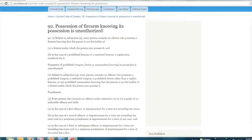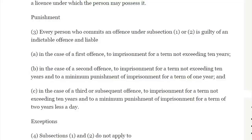So, here's the Criminal Code. Let's have a look here under Punishment. Every person who commits an offense under subsection 1 or 2, is guilty of an indictable offense. So, there's no summary conviction here. In the case of a first offense, to imprisonment for a term not exceeding 10 years. So, 10 years and it's indictable right off the bat. In the case of a second offense, 10 years plus 1. In the case of a third, 10 years plus 2.